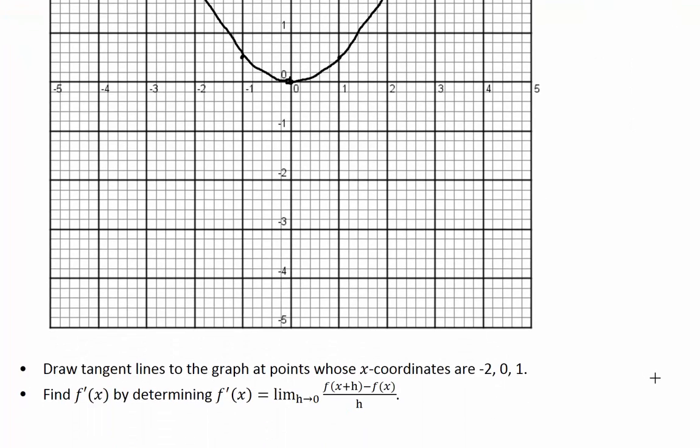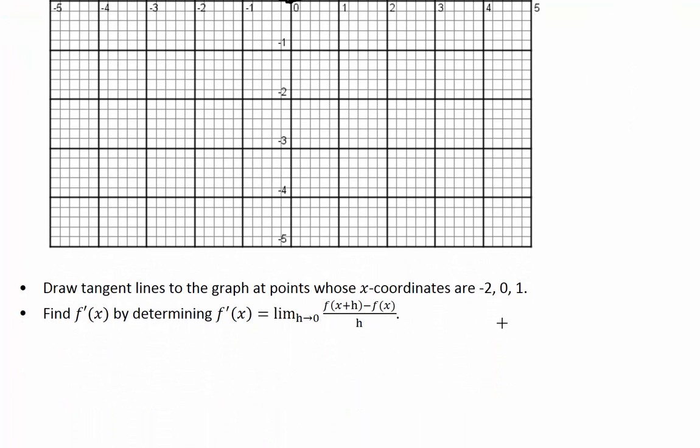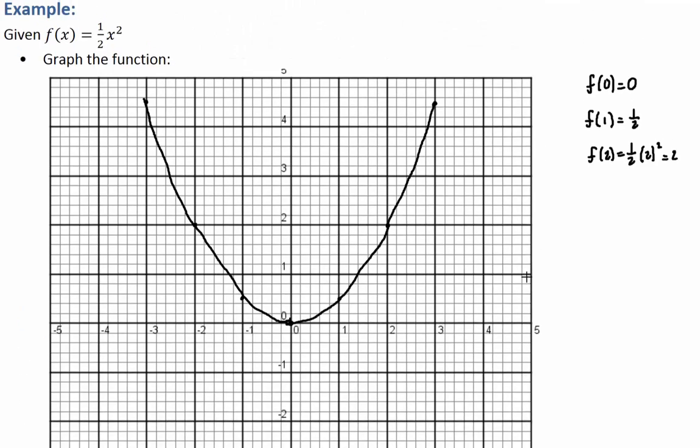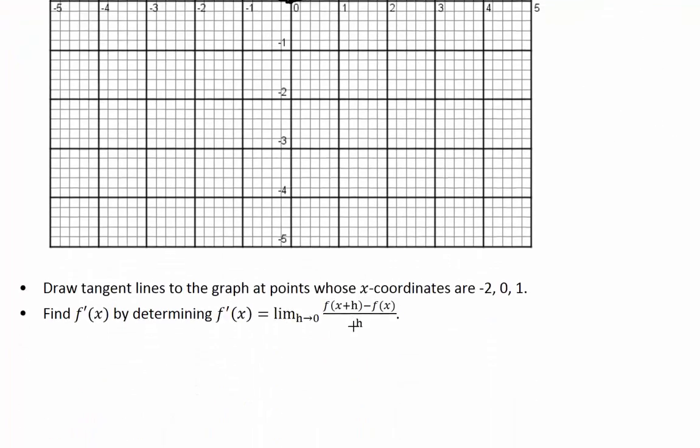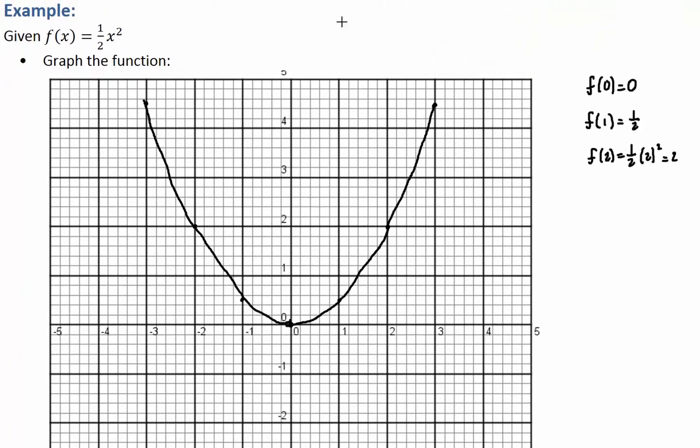So let's keep going. Let's see what the problem says. Draw tangent lines to the points whose x coordinates are negative 2, 0 and 1. Alright, let's try to draw that.